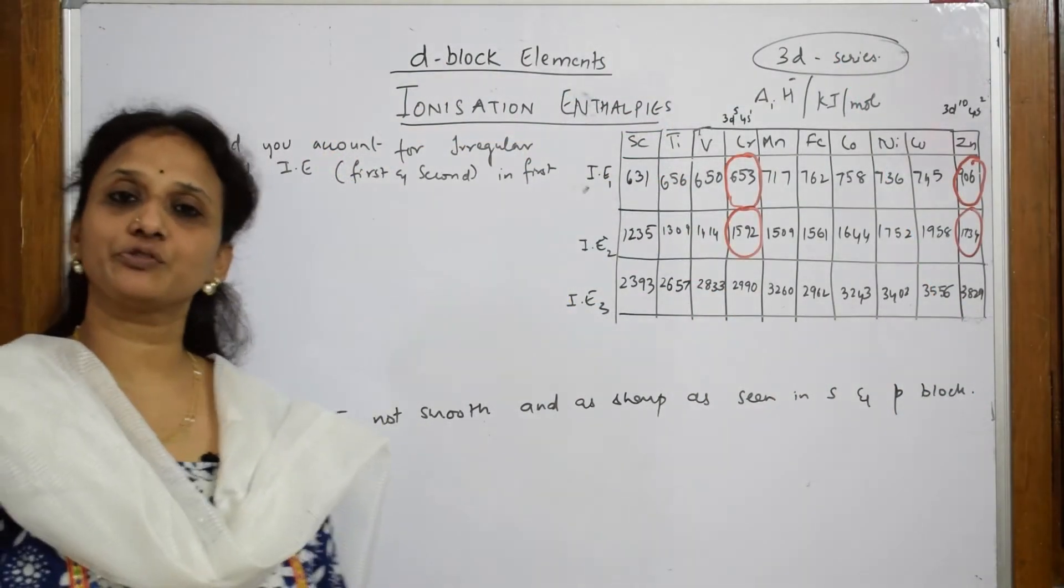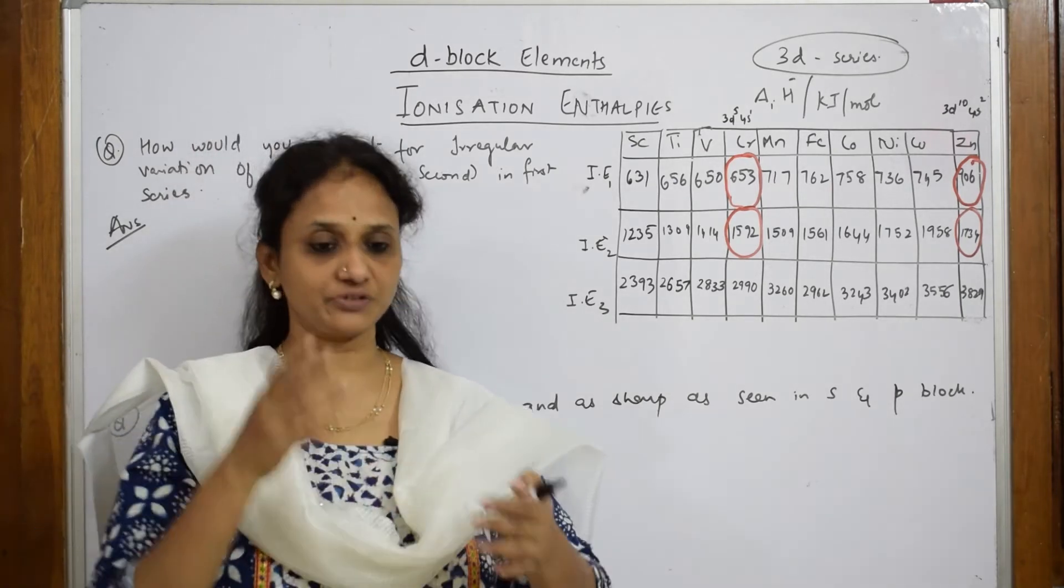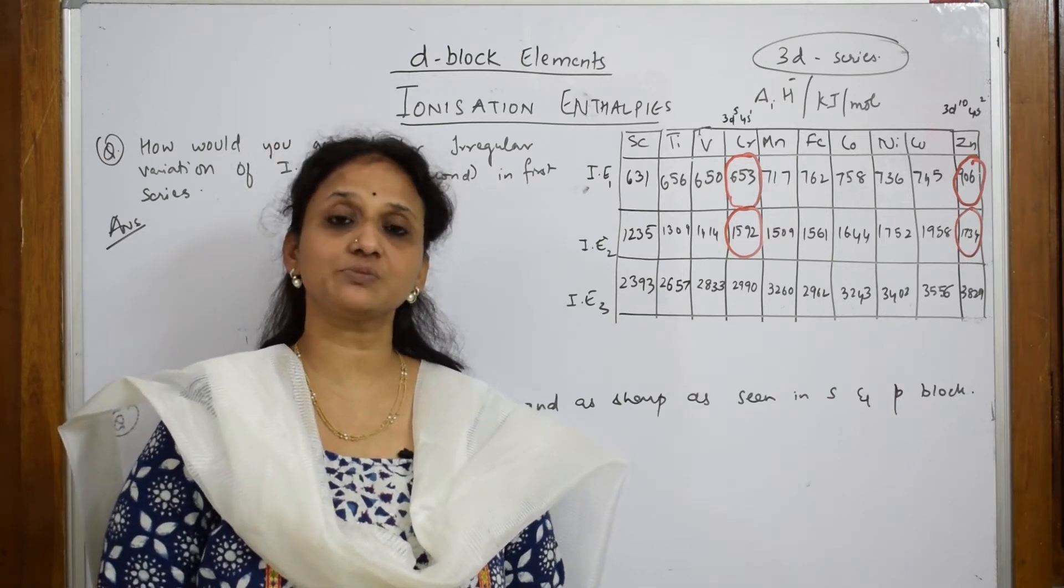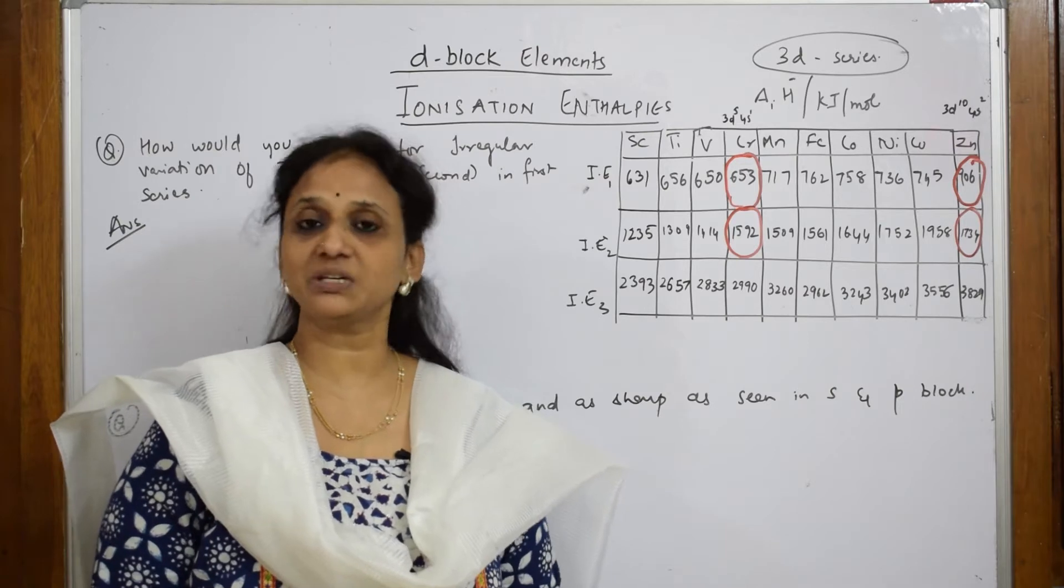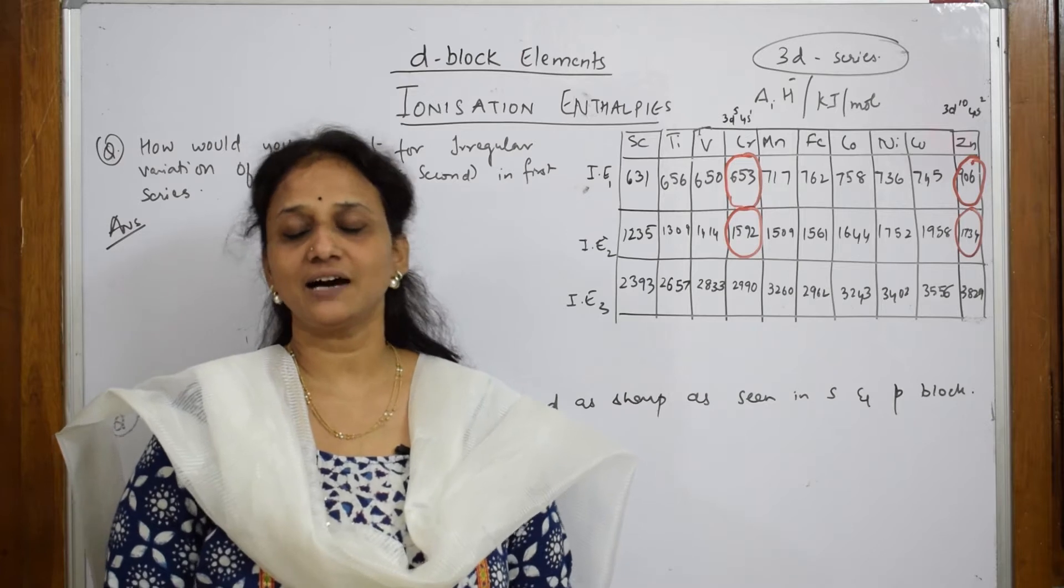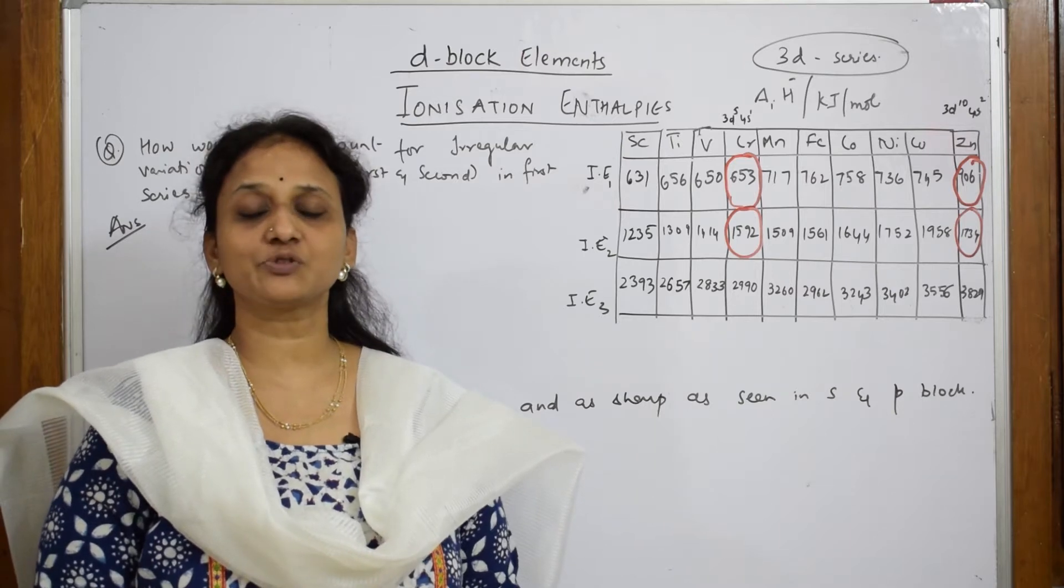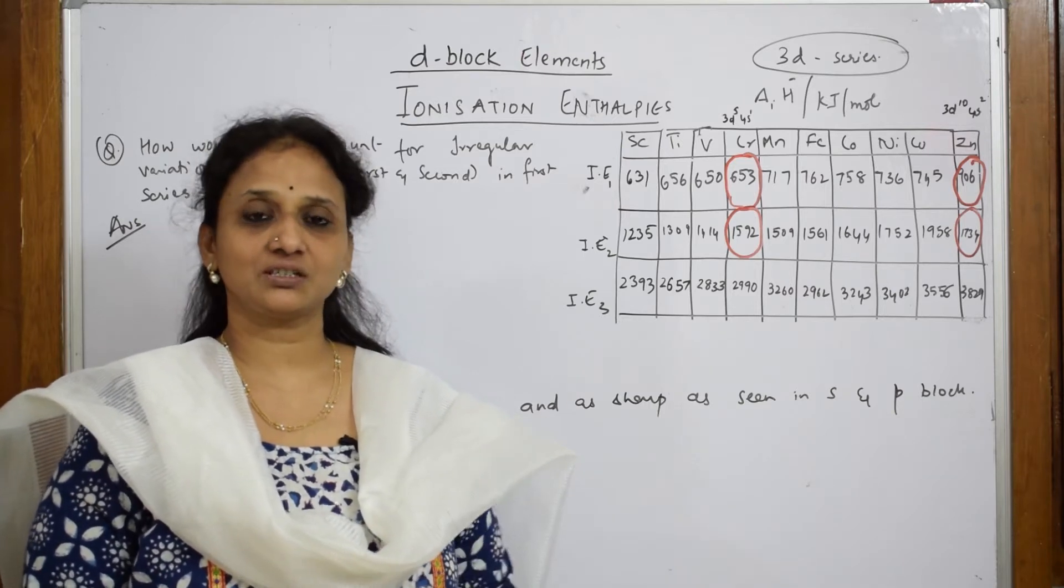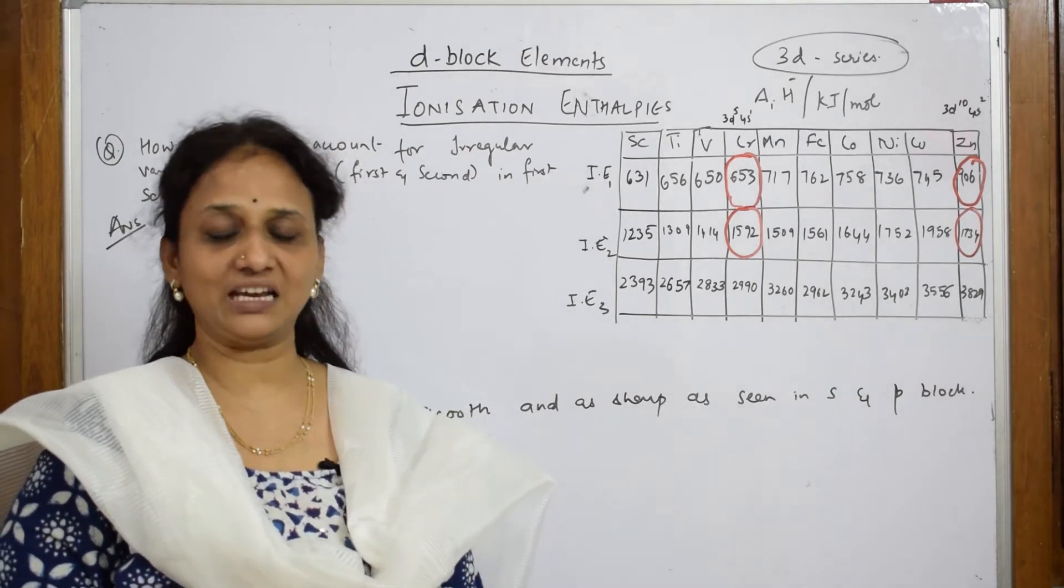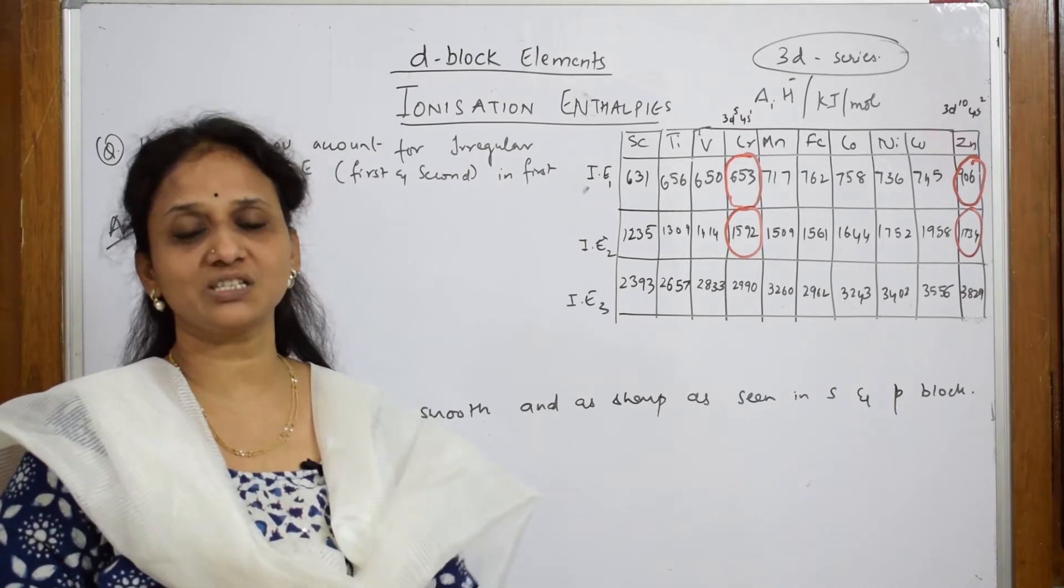Welcome back to one more session of your d-block chapter. I already started the d-block chapter explaining the different trends based on electronic configuration. After we learned electronic configuration, we came to concepts of trends in atomic and ionic radii. After atomic and ionic radii, we dealt with enthalpy of atomization, which is the amount of energy required when one mole of gaseous atom is obtained from its respective elements.